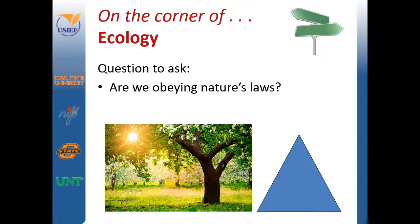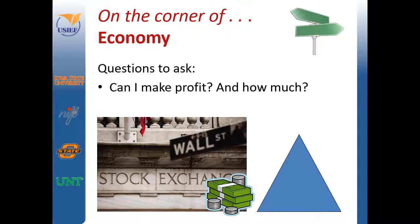Along the second side of the pyramid, we address ecology. A business addresses environmental well-being by answering the question: are we obeying nature's laws? The economic aspect of the triple bottom line is the final side of the pyramid. This refers to economic well-being and a business's financial state. A business can evaluate their economic well-being by asking: can I make a profit, and how much?